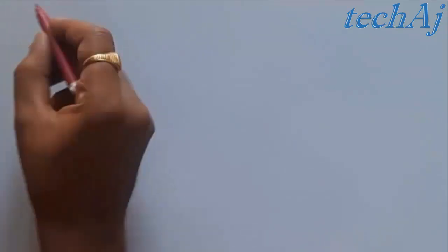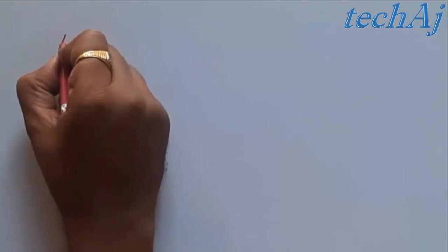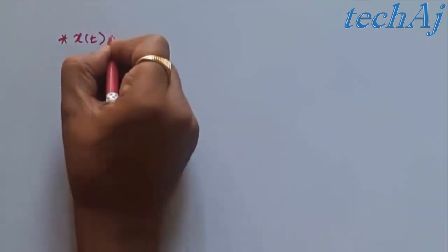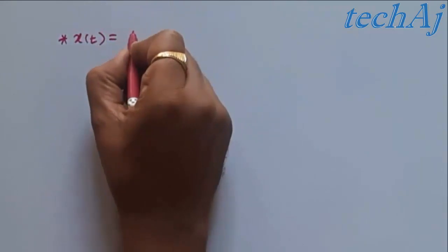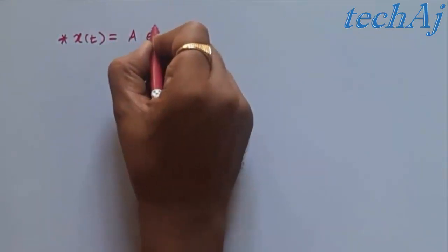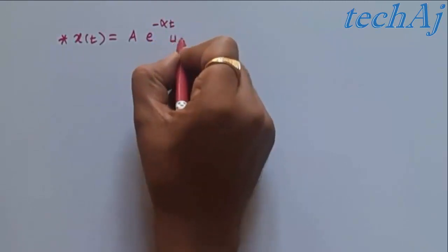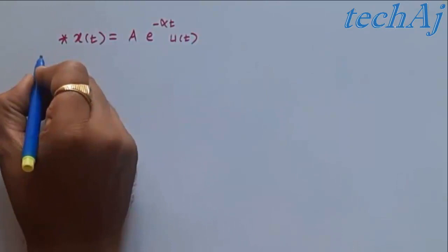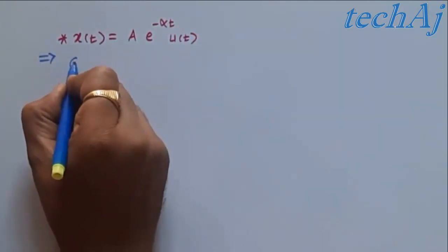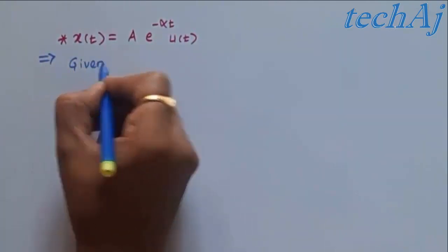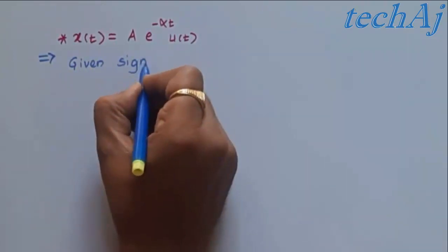Welcome all to the video lectures of signals and systems. In this video, we are going to check whether an exponential signal is an energy signal or a power signal, and what is its value. The given signal is the exponential signal x(t) = Ae^(-αt) · u(t).